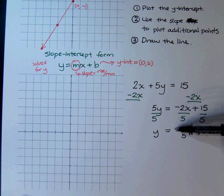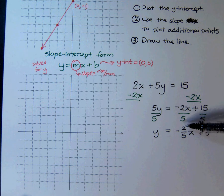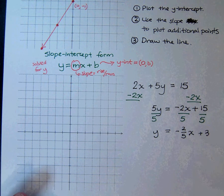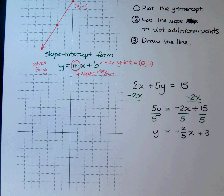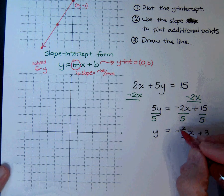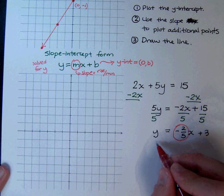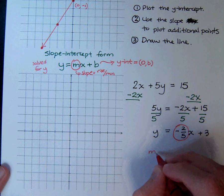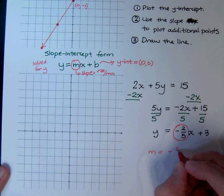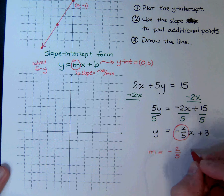Did I have to write it like this? No, but by writing it this way, it makes it very easy for me to see the coefficient of x. So the coefficient of x is now negative 2 fifths after I've solved for y. So my slope is negative 2 fifths. Keep in mind, we are talking about the rise over run.